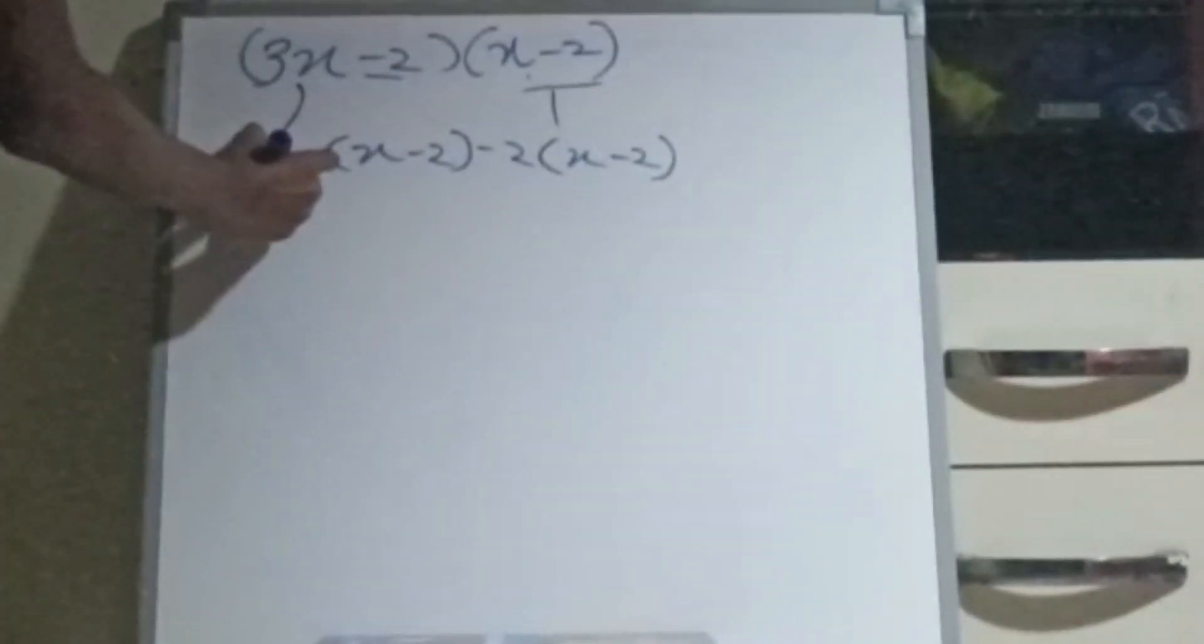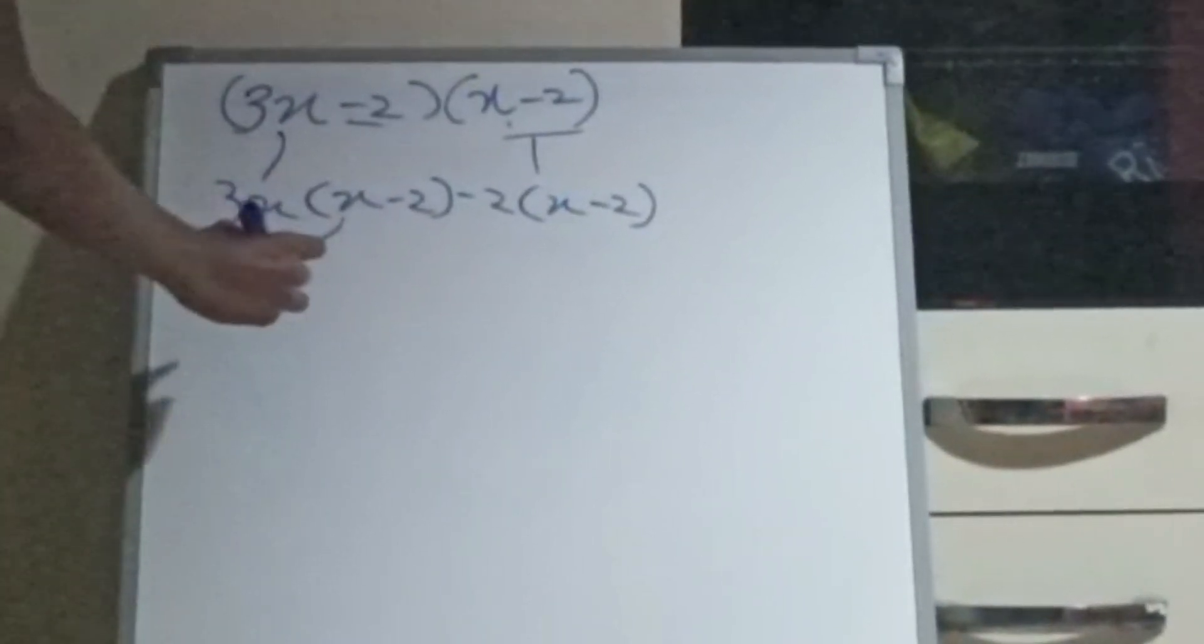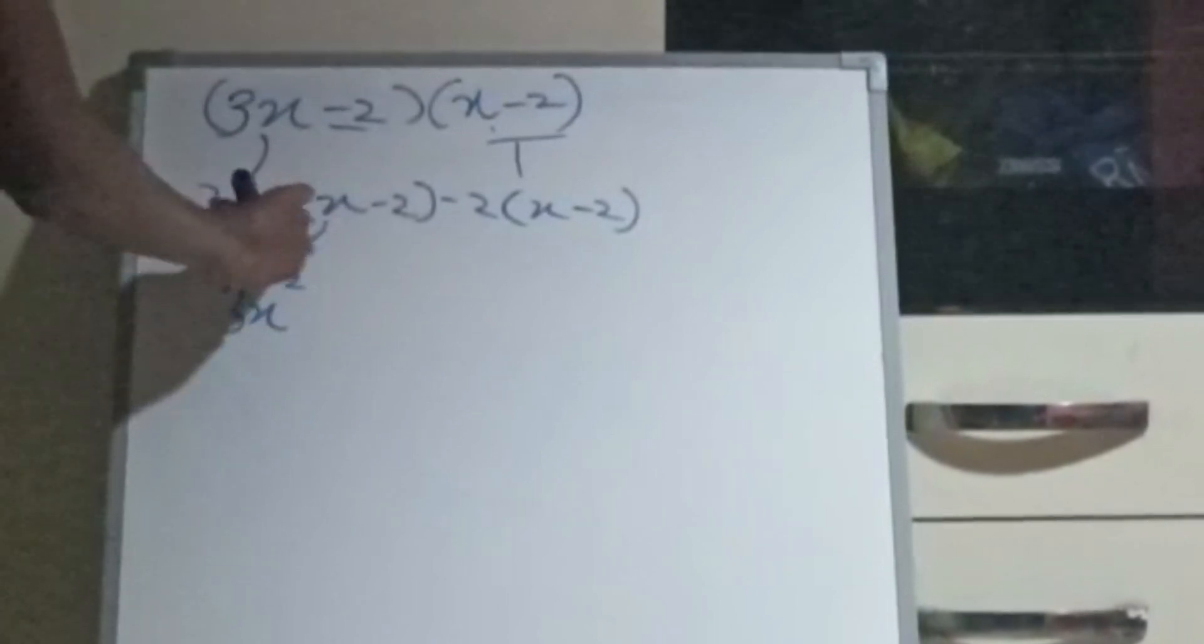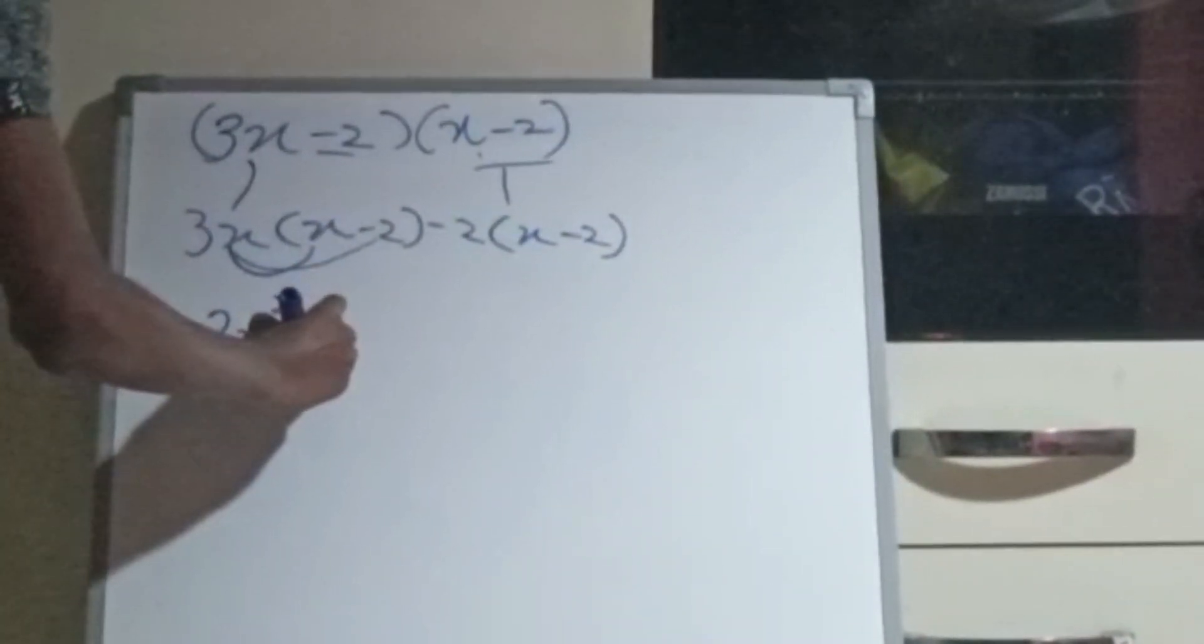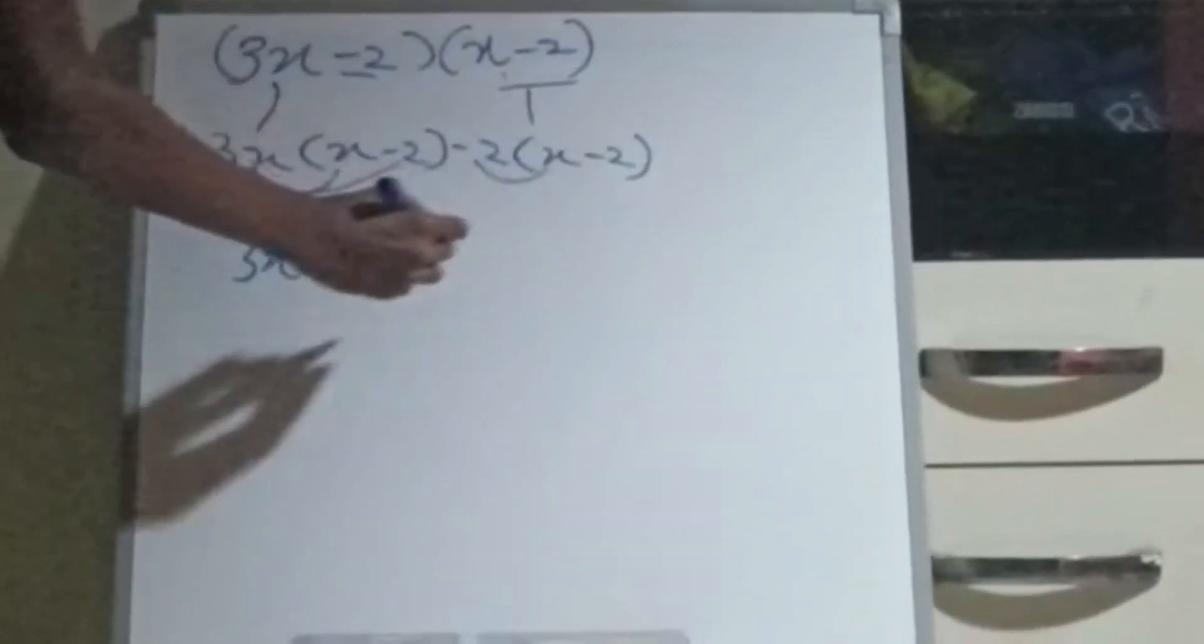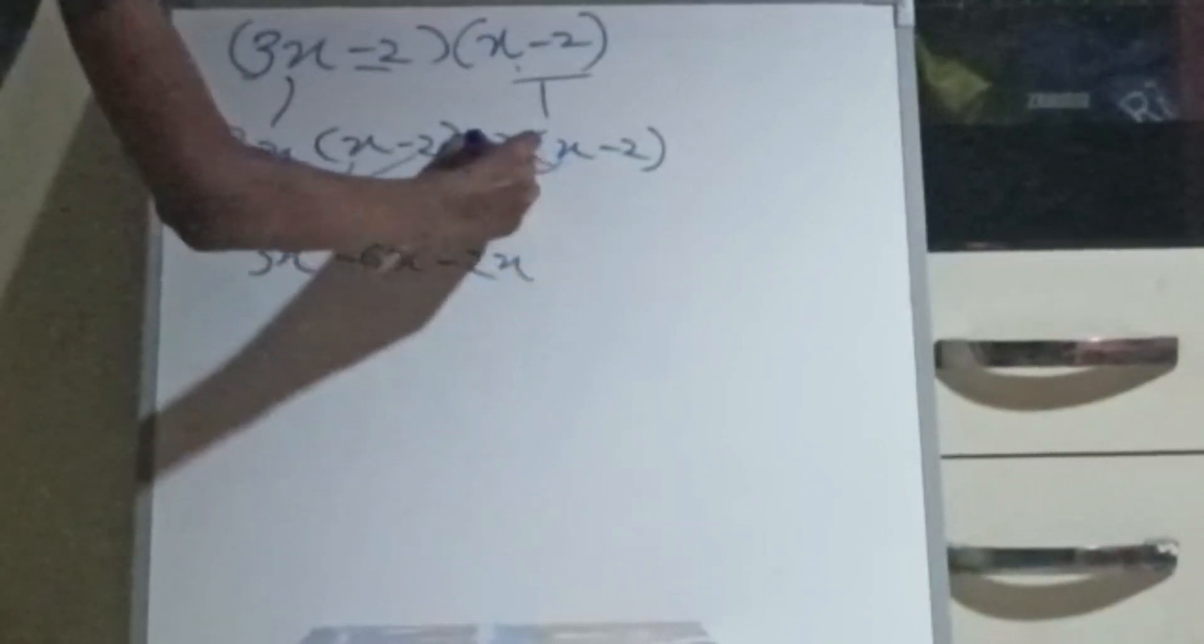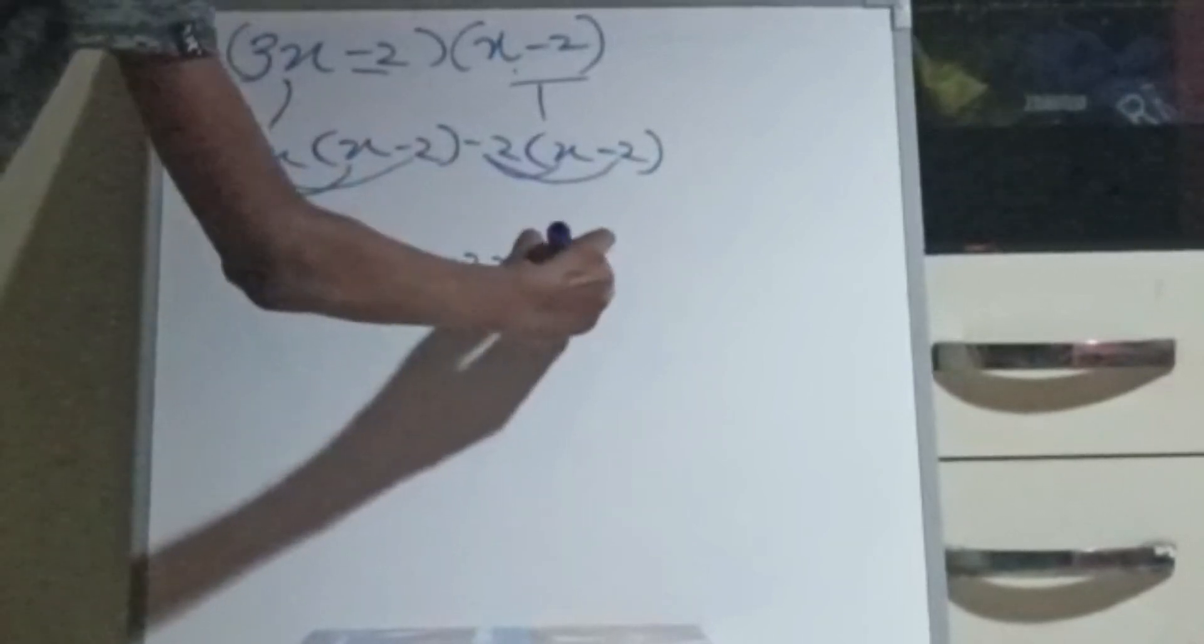Let's simplify. 3x multiplied x, 3x square. 3x multiplied minus 2, minus 6x. Here minus 2 times x, minus 2x. Here minus 2 times minus 2 plus 4.